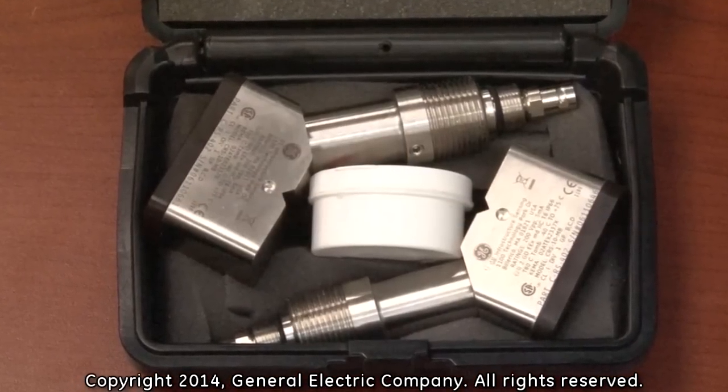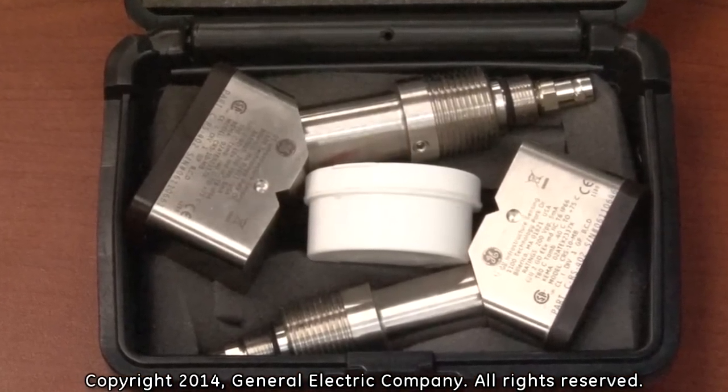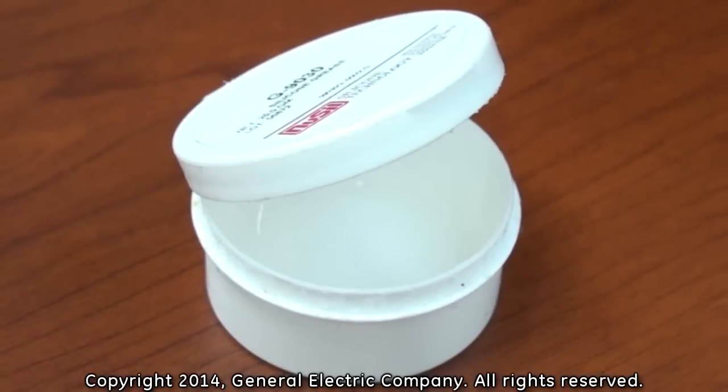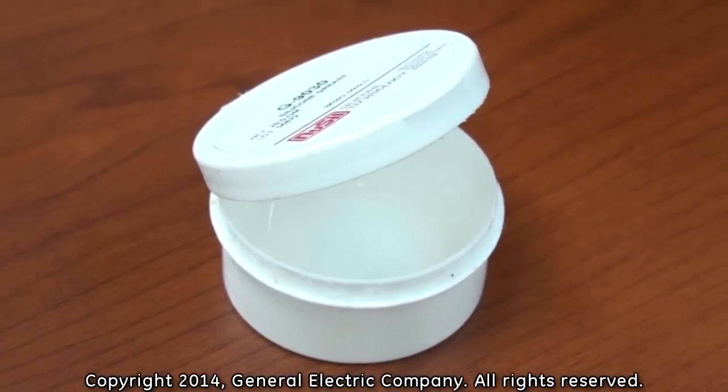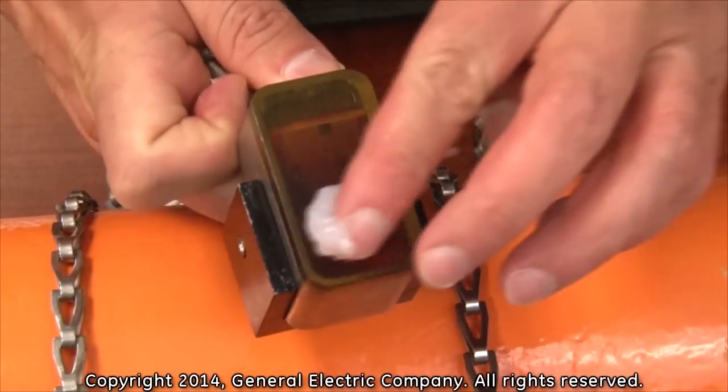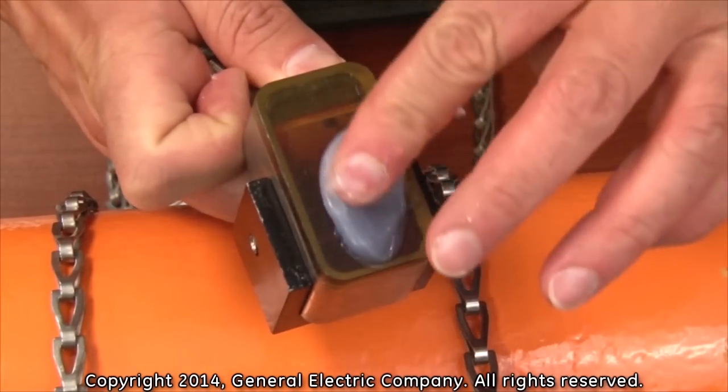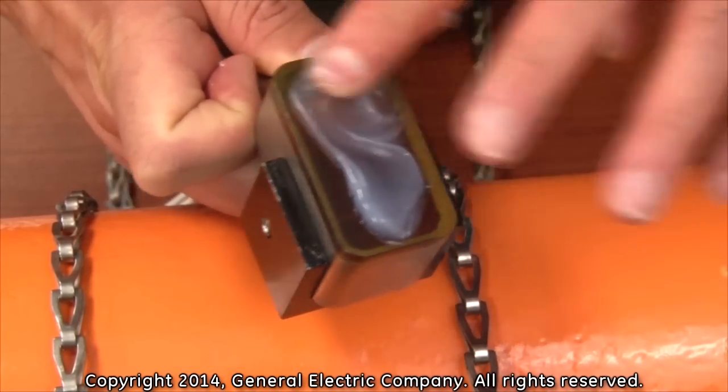Before installing the transducers, you must apply couplant onto the face of each transducer. Use only the recommended couplant for your specific transducers and application. Use as much couplant as you would toothpaste on a toothbrush and evenly cover the face of the transducer.